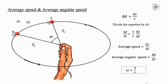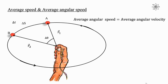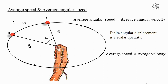This is the magnitude form of the relation between angular speed and linear speed. Average angular speed equals average angular velocity because finite angular displacement is a scalar quantity. But average speed is not equal to average velocity, because as you can see in the diagram, arc length delta S is not equal to displacement delta R. So we can't use the formula delta theta equals delta S divided by R to find velocity. We need to express the equation in vector form.